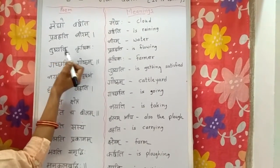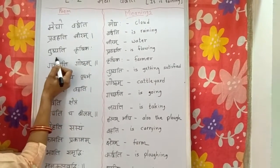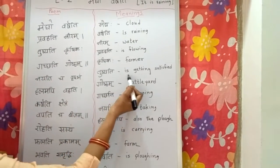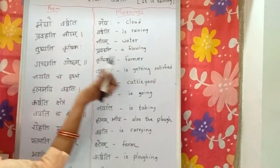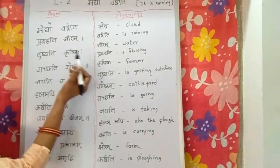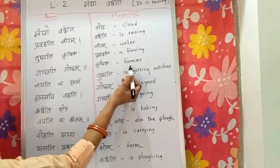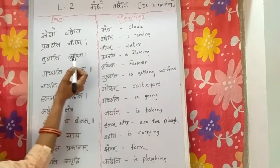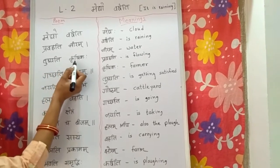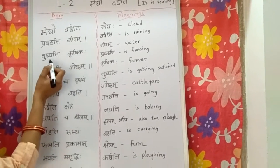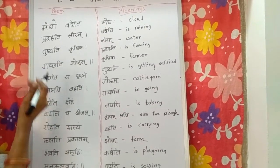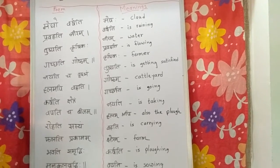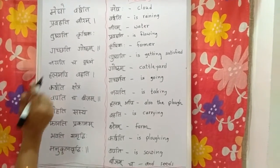Tushyati Krushikaha. Krushikaha means farmer and Tushyati means is getting satisfied. So the farmer is getting satisfied — जब बारिश होती है तो farmer satisfied हो जाते हैं, लोग खुश हो जाते हैं — when it rains, the farmer becomes happy.